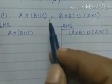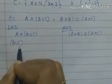Now we will get the roster form and compute the Cartesian products. For Part 1, we start with the left-hand side: A×(B∪C). First, let's find B∪C. B = {0,1} and C = {1,2}, so B∪C = {0, 1, 2}.